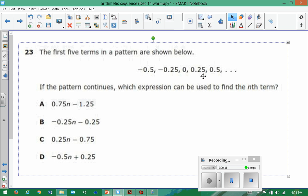The fourth term is twenty-five hundredths, and the fifth term is five tenths, on and on, forever. So if we keep this pattern going, which expression can we use to find the nth term?